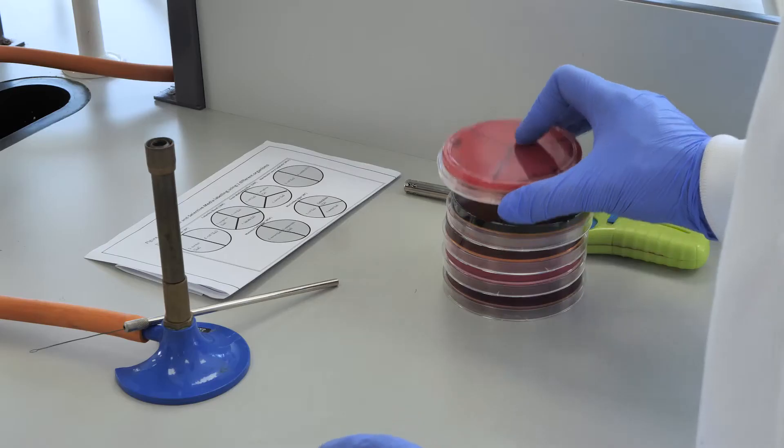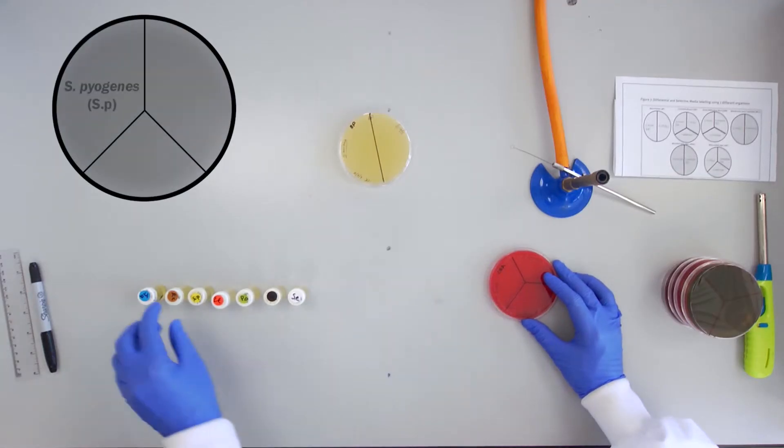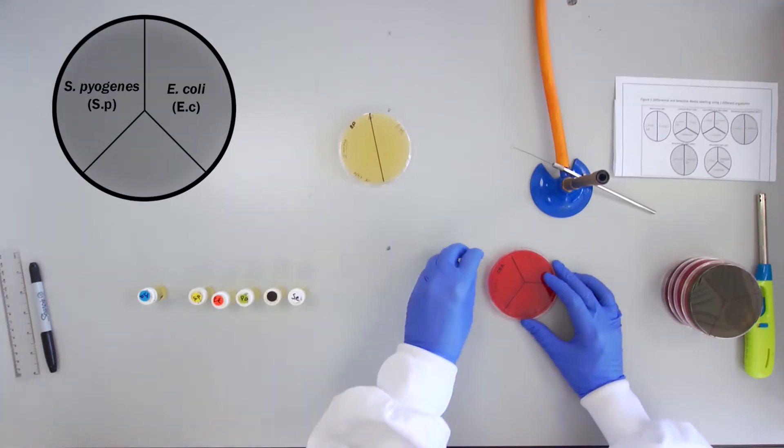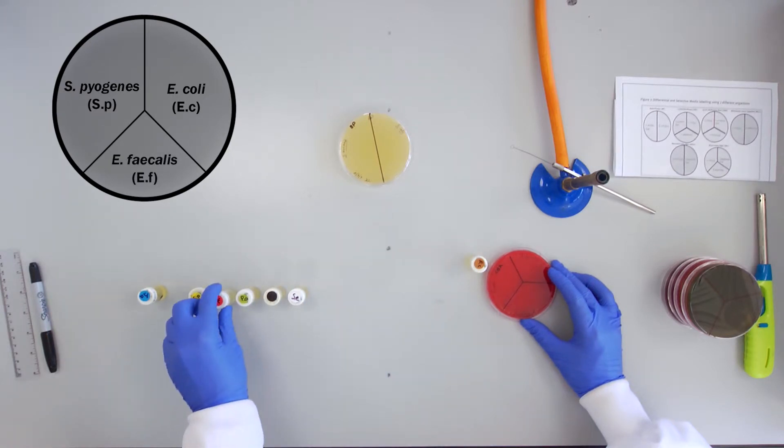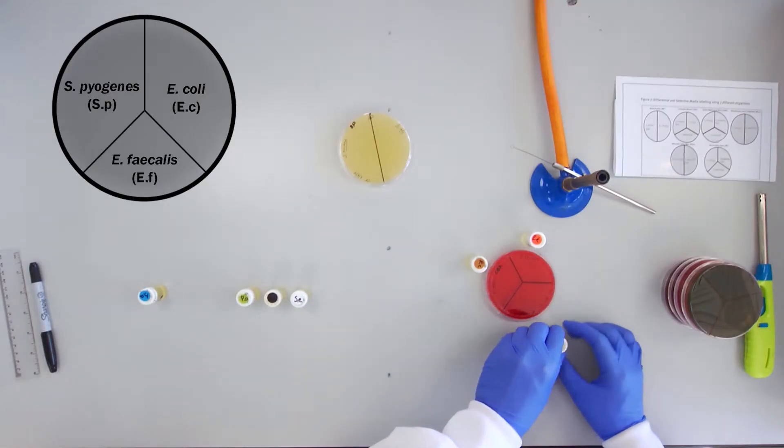The Columbia blood agar or CBA is a rich red color and will be inoculated with Streptococcus pyogenes, E. coli, and Enterococcus faecalis.